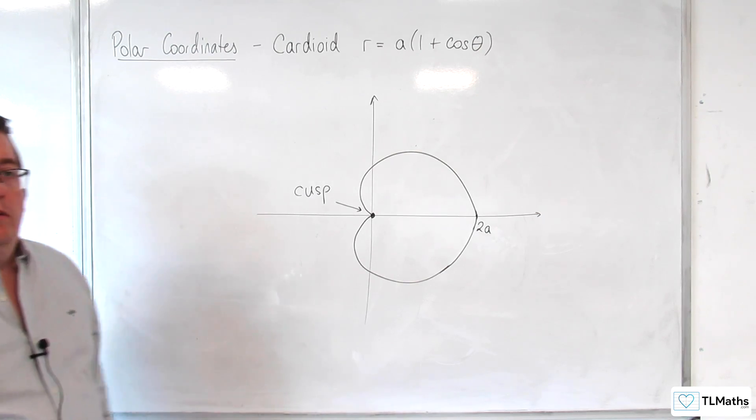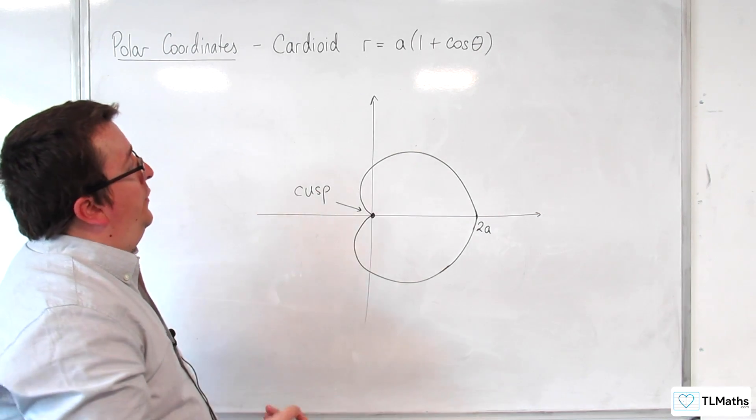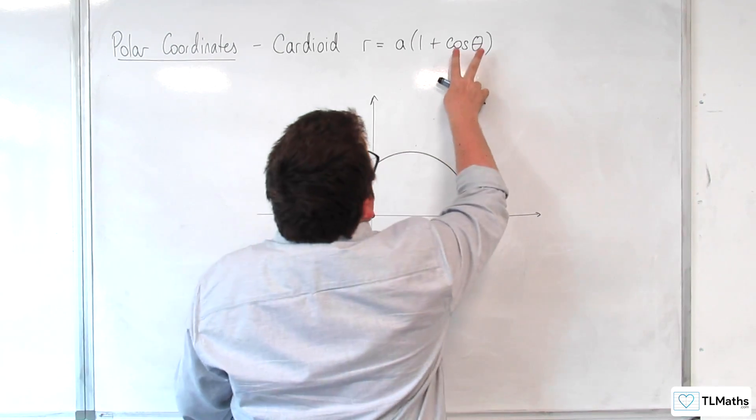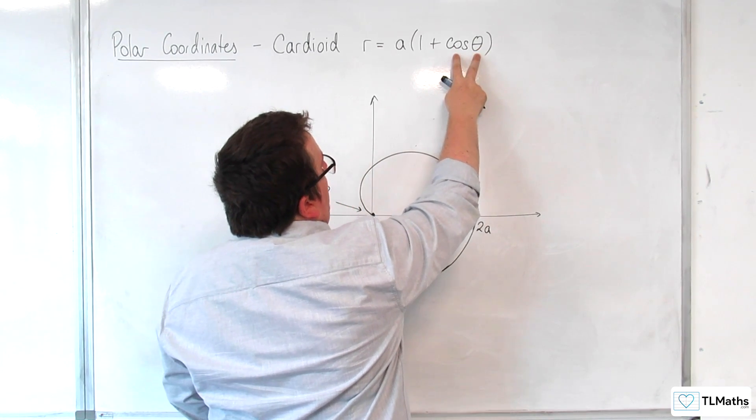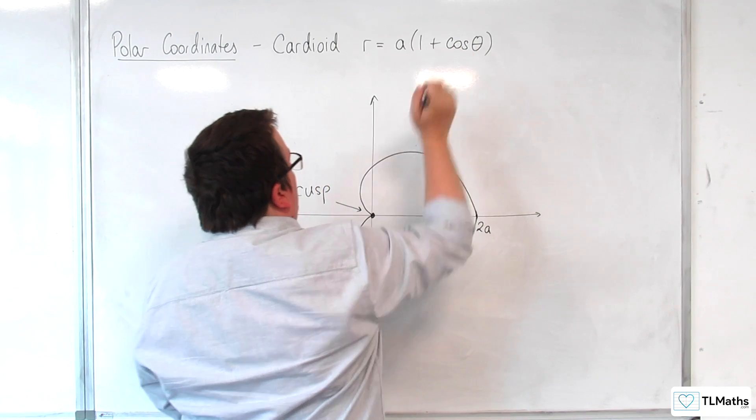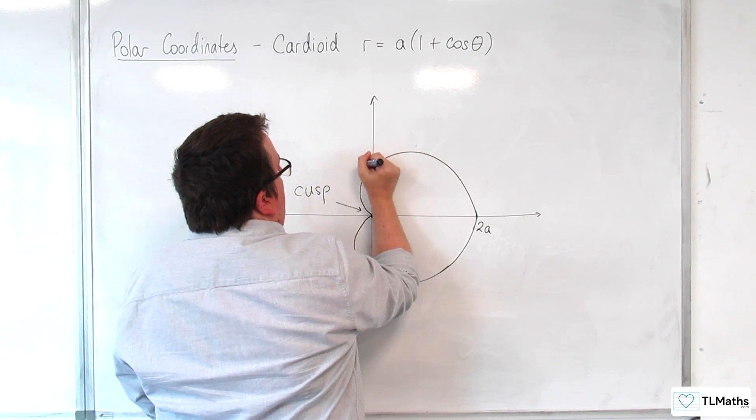And when theta is pi over 2, you get cosine of pi over 2, which is equal to 0, and so that is A there.